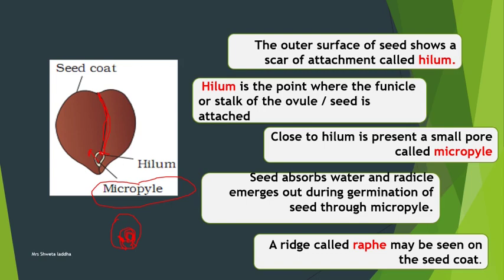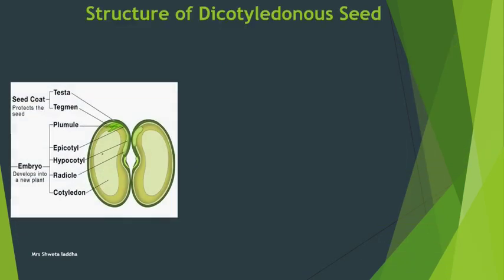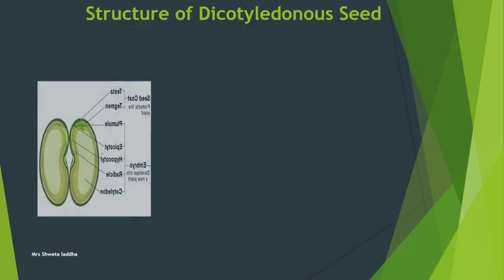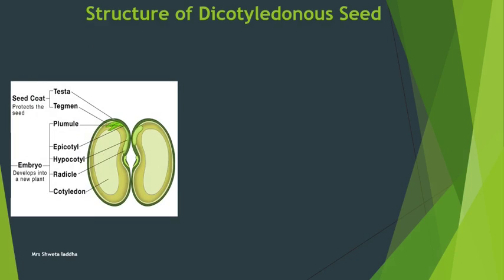Now let us see in detail the structure of a dicot seed. A dicot seed has two cotyledons, and in the center there is the embryonic axis. On the upper part of the embryonic axis arises the epicotyl, and above the epicotyl the plumule comes out. The plumule gives rise to the shoot system.